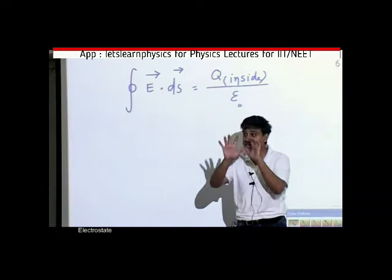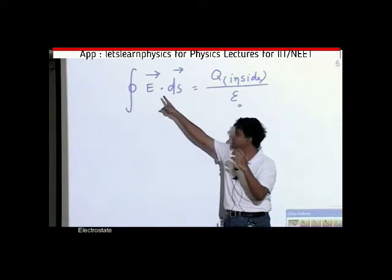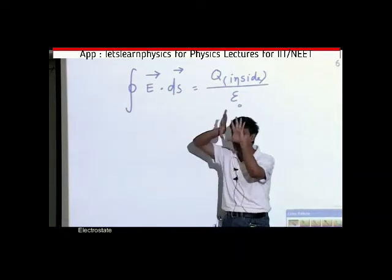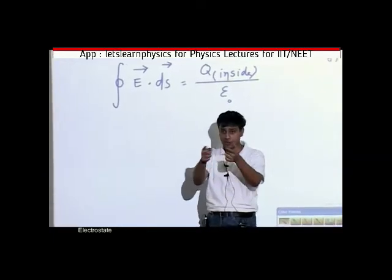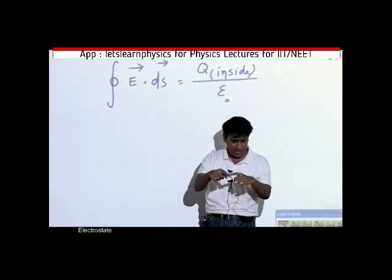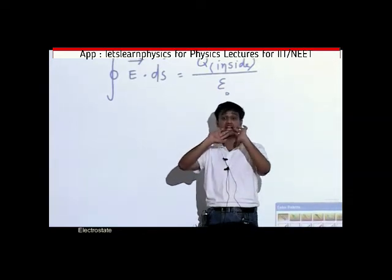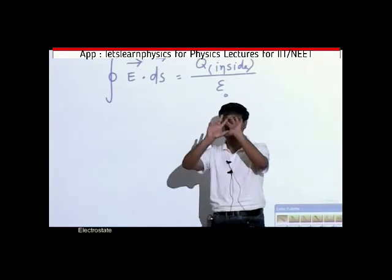What did Gauss say? Gauss said that this symbol means the surface is closed. Until now, you took a square, then a rectangle, then a circle. If you remove the flux from what surface? Closed. It means a closed surface.